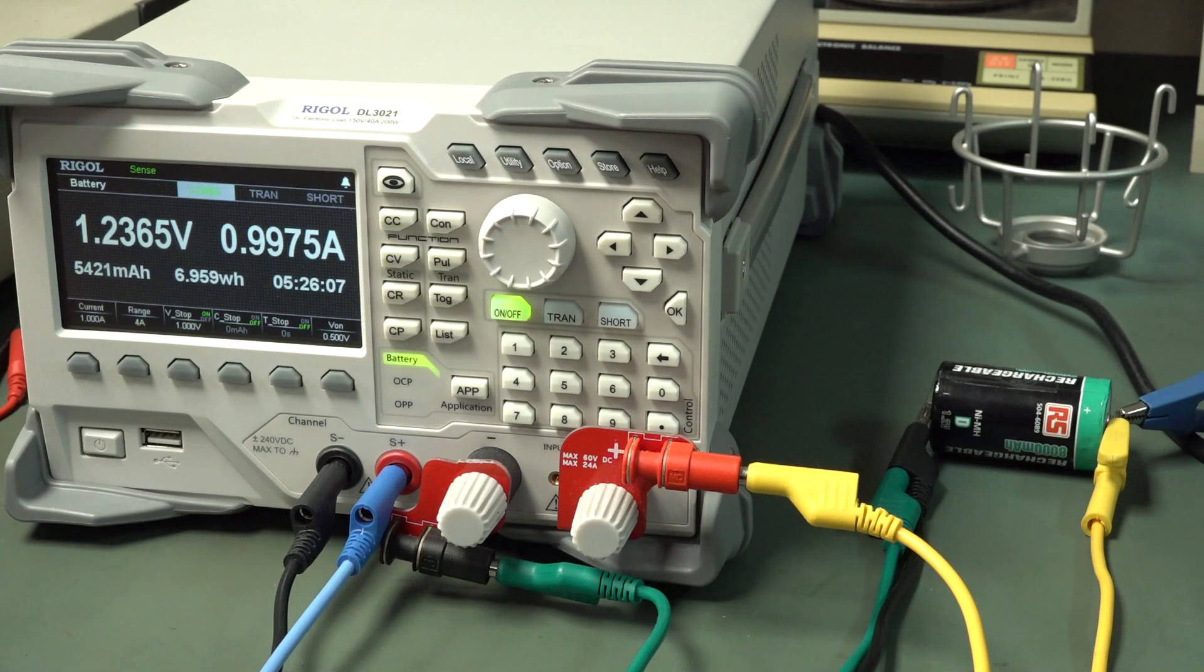And almost 5 and a half hours later, 5,420 milliamp hours, almost 7 watt hours. And it's still going 1.236 volts where we've set a cutoff voltage of 1 volt. But of course, right at the end, it'll start to rapidly fall off. So I don't know. It could die in another 20 minutes or something. I just don't know.